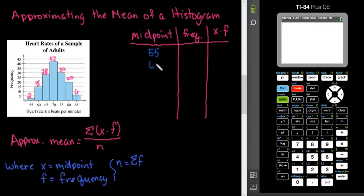So, I would use 55, 60, 65, 70, 75, 80, and 85.